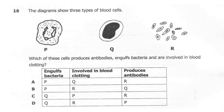Question 16. The diagram below shows three types of blood cells: P, Q, and R. Which of these cells produces antibodies, engulfs bacteria, and is involved in blood clotting? A: engulfs bacteria P, involved in blood clotting Q, produces antibodies R. B: engulfs bacteria P, involved in blood clotting R, produces antibodies Q. C: engulfs bacteria Q, involved in blood clotting R, produces antibodies R. D: engulfs bacteria Q, involved in blood clotting R, produces antibodies P.